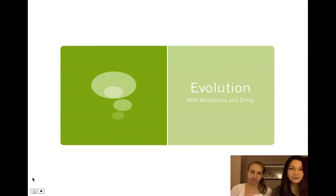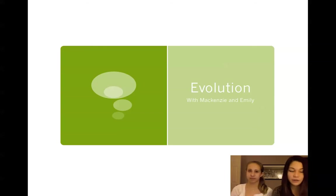Hello, this is Emily and Mackenzie, and we are going to talk about evolution corresponding to chapter 22 in the textbook. This is meant for AP Biology students at Summit High School.